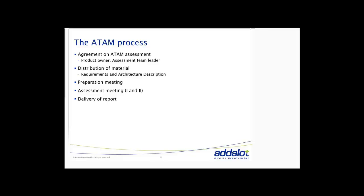Those things are usually very much hidden in the organization — maybe they exist only in the heads of some of the architects, and marketing doesn't know about them. So we end up with a situation where people have built a very simple house but have very big ambitions for it, expecting it to do things that will be very hard to achieve. ATAM is a process and method to try to bring this out into the light, hopefully early so that we can take the right decisions while we still have time.